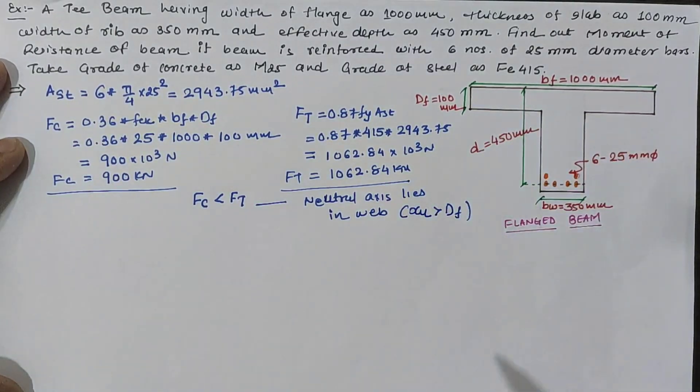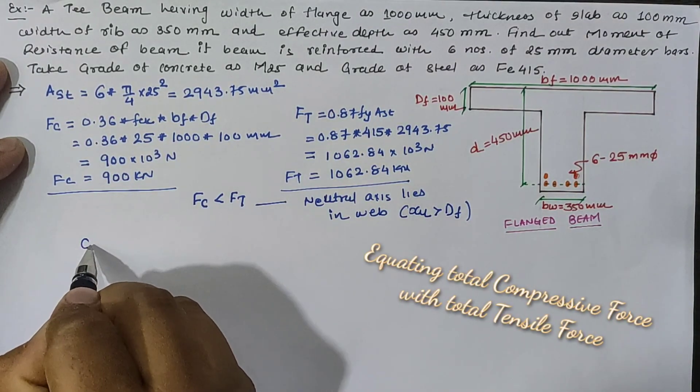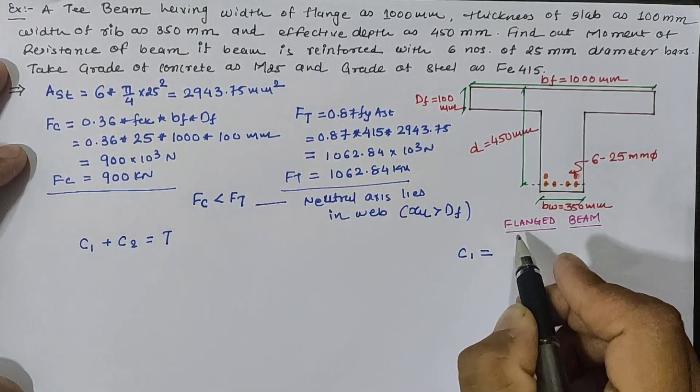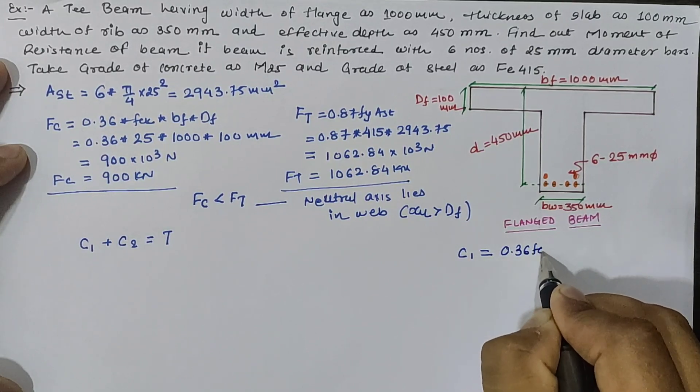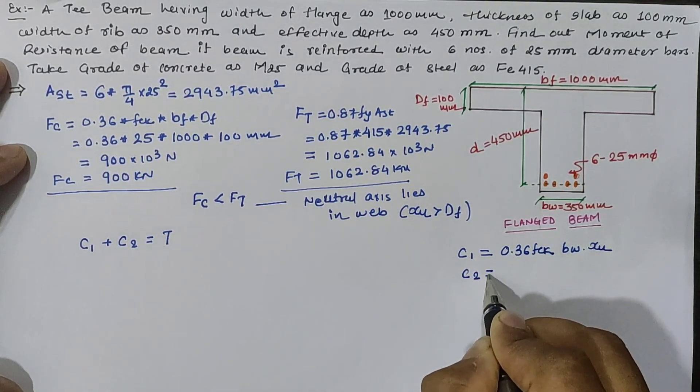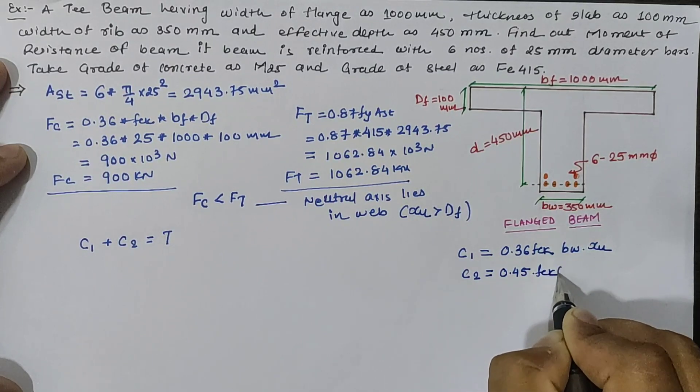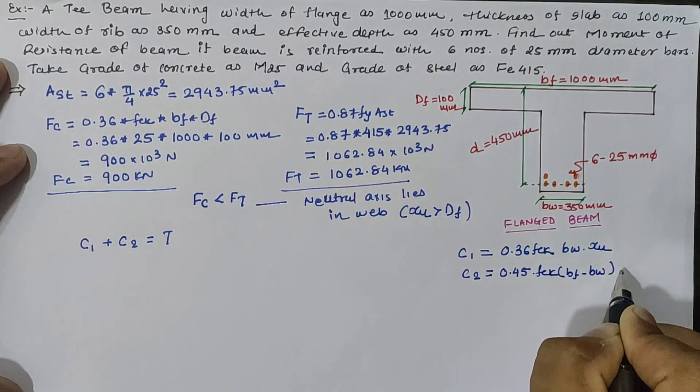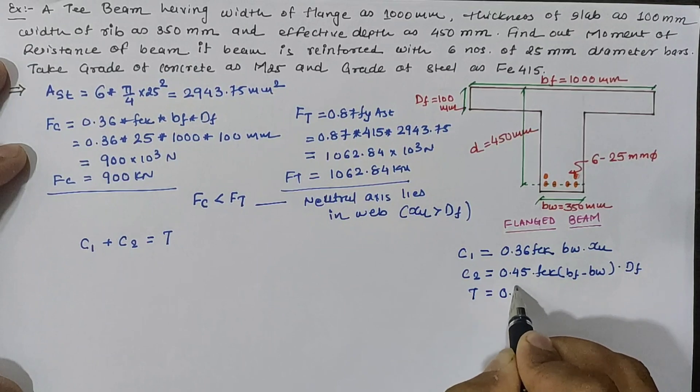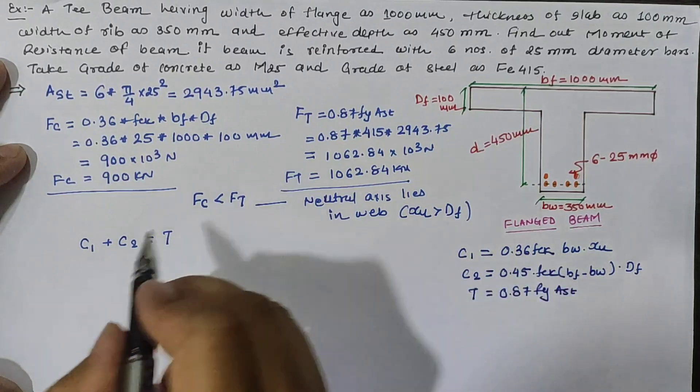Let us calculate the value of neutral axis by equation C1 + C2 = T, where C1 is calculated by equation 0.36 fck bw xu, while C2 can be calculated by equation 0.45 fck (bf - bw) df, and T can be calculated by equation 0.87 fy Ast. So let us put all these values in the equation.